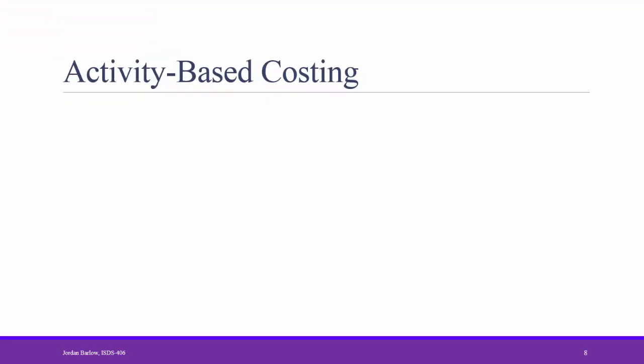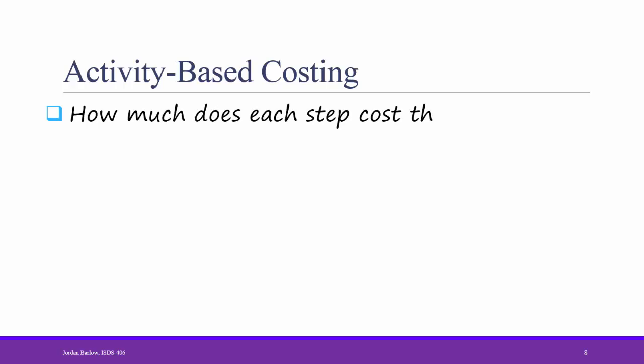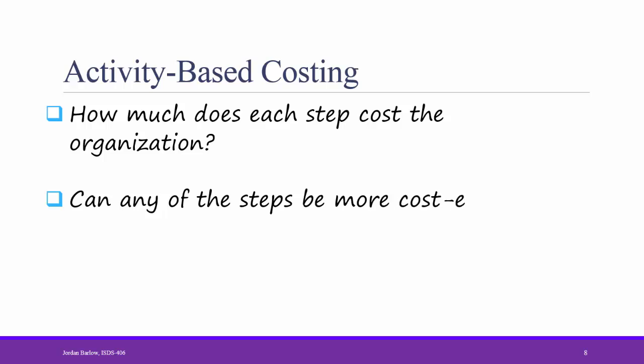In activity-based costing, the analyst also breaks up the process into individual steps and asks how much does each step cost the organization. Can any of the steps be more cost efficient? For example, would it be more cost efficient to have customers submitting their forms online rather than meeting with loan officers?